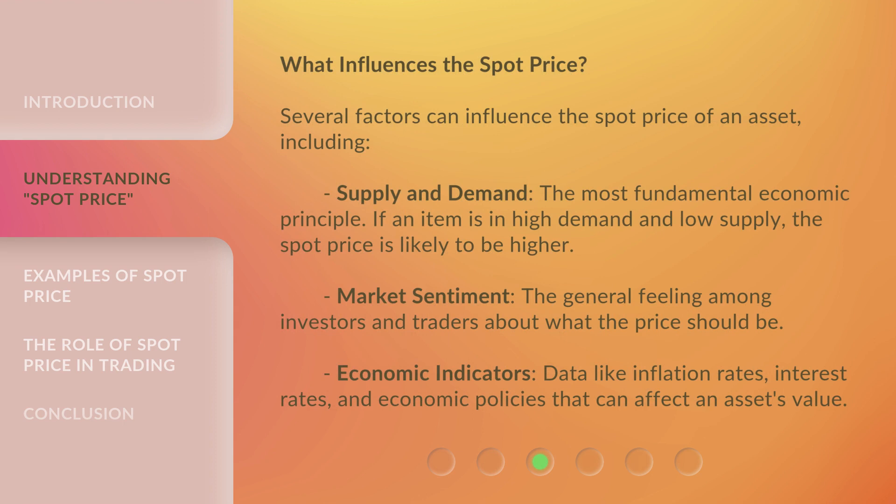What influences the spot price? Several factors can influence the spot price of an asset, including supply and demand — the most fundamental economic principle. If an item is in high demand and low supply, the spot price is likely to be higher. Market sentiment — the general feeling among investors and traders about what the price should be. And economic indicators — data like inflation rates, interest rates, and economic policies that can affect an asset's value.